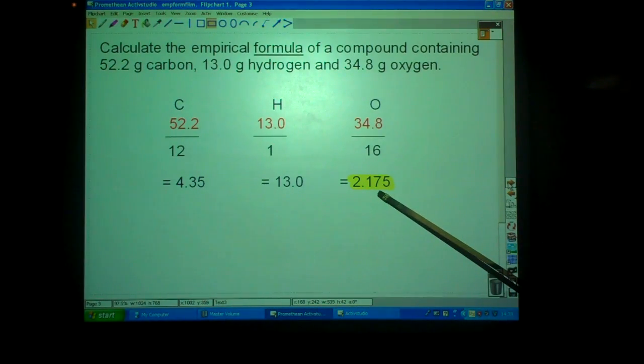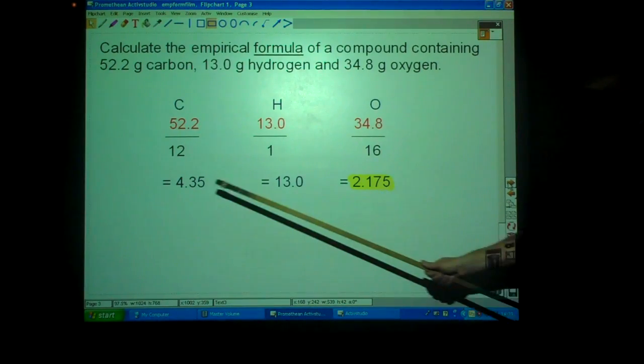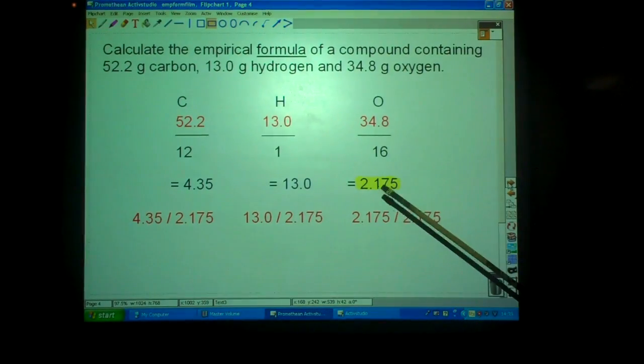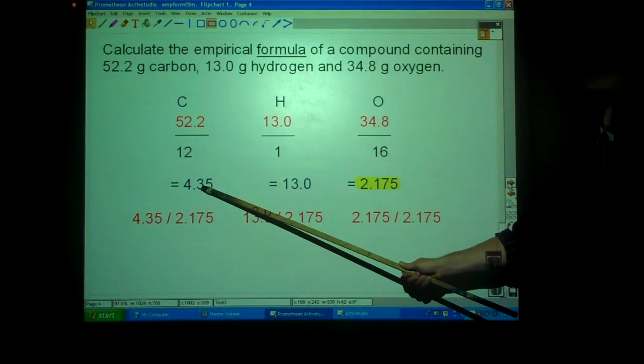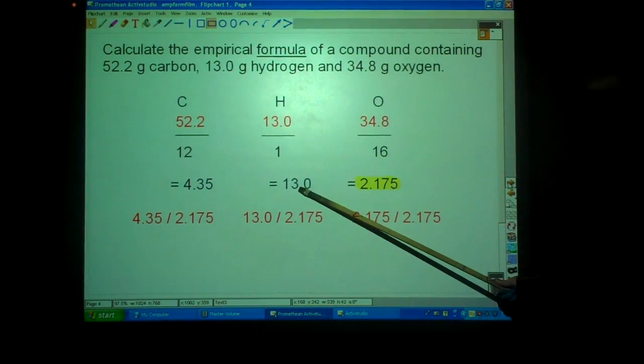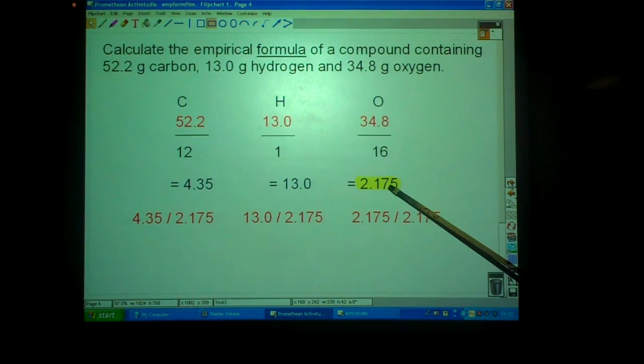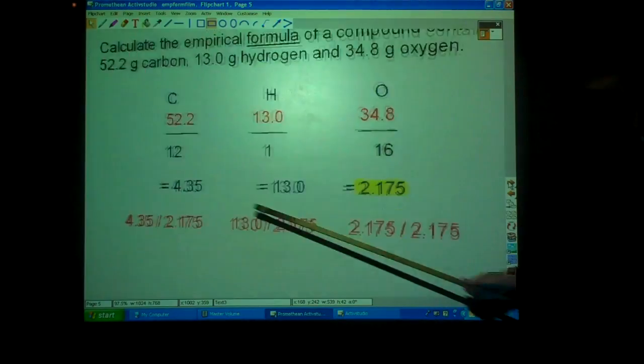The reason this one is highlighted is because in the next step you've got to divide each one by the smallest to turn it into a whole number ratio. So, you find the smallest number and you do 4.35 divided by the smallest number, 13.0 divided by the smallest number and 2.175 divided by the smallest number. There are the sums there.